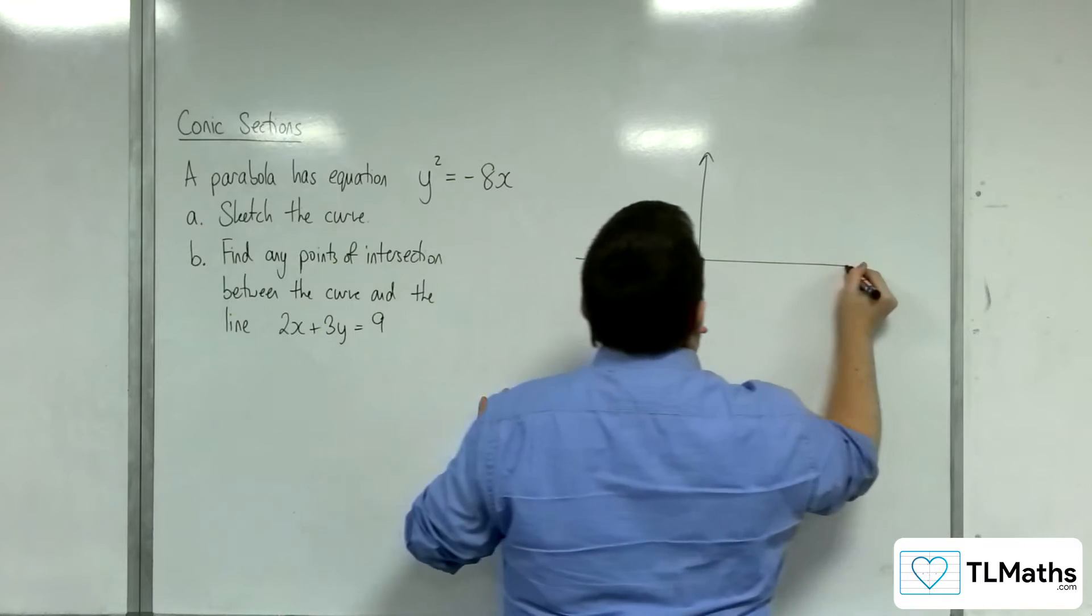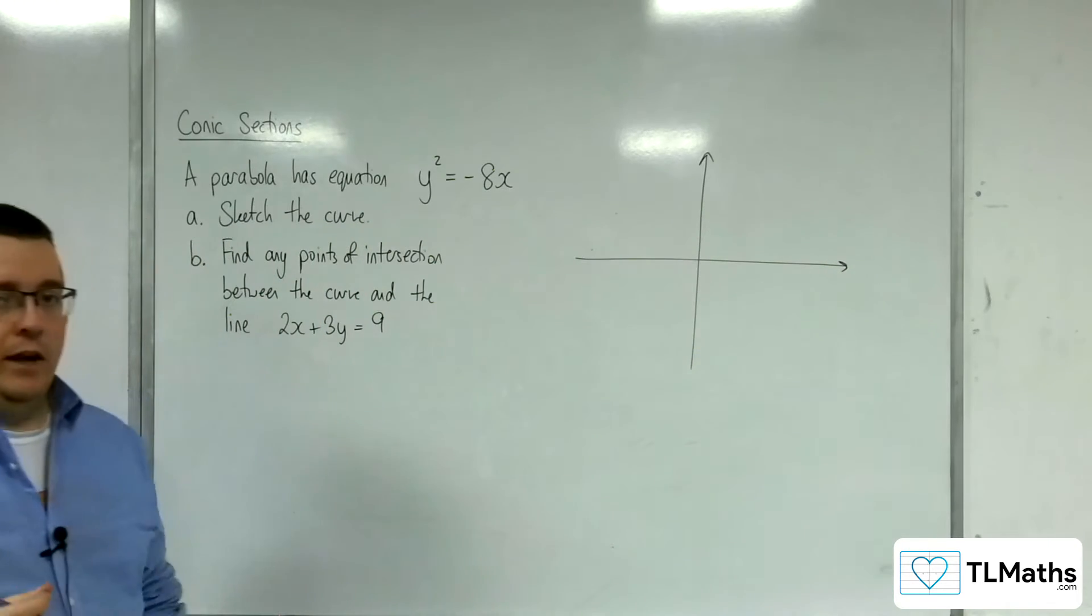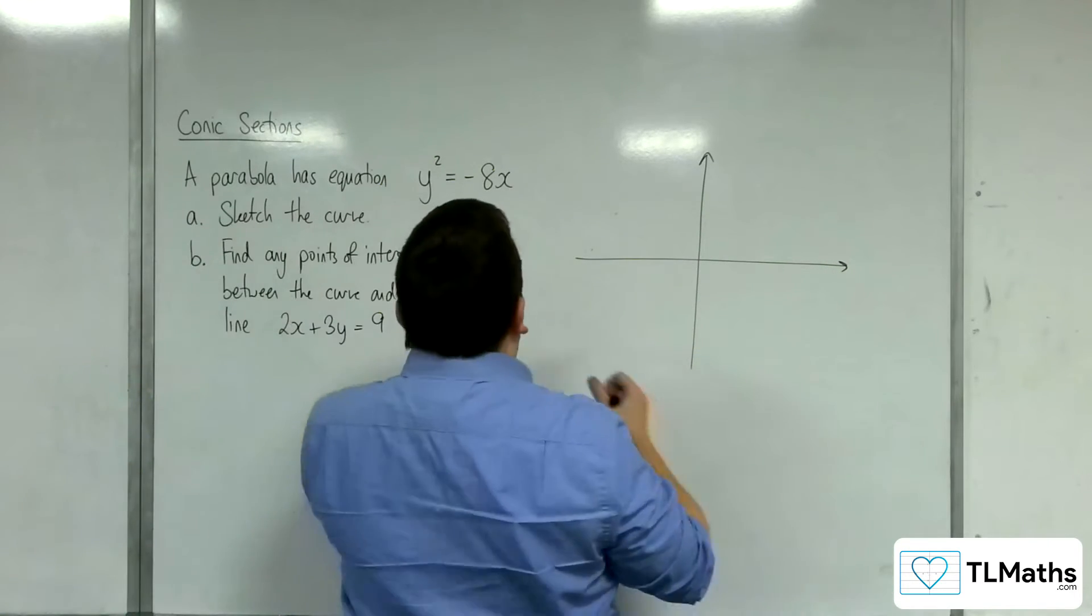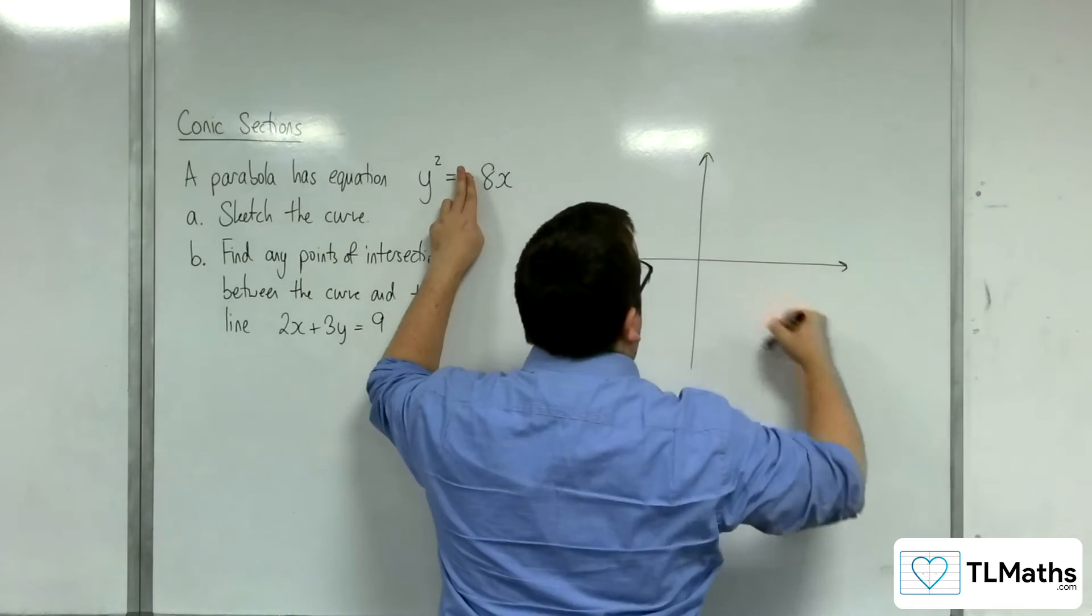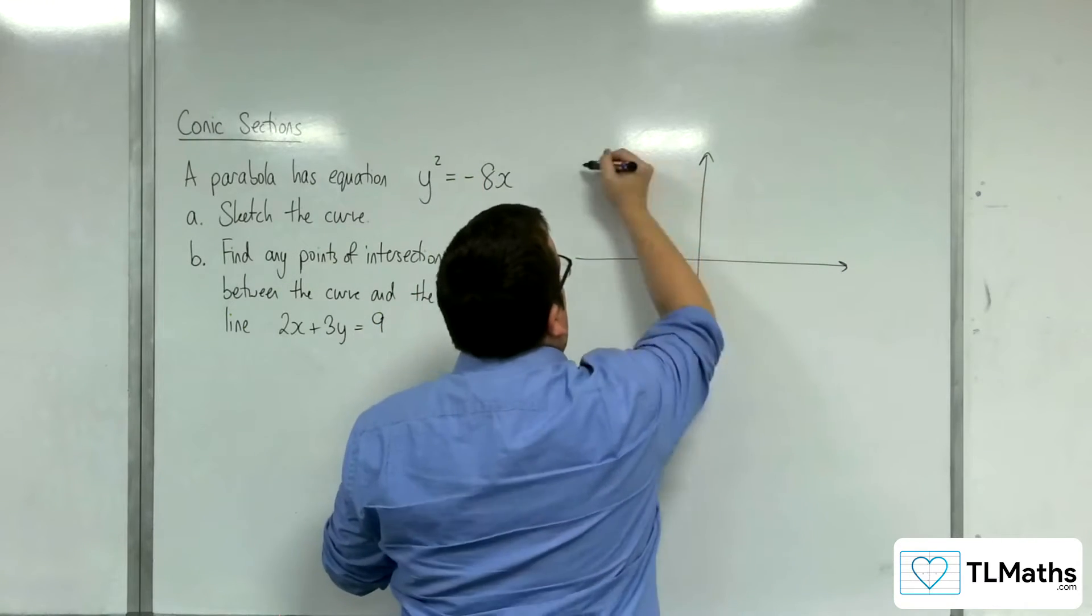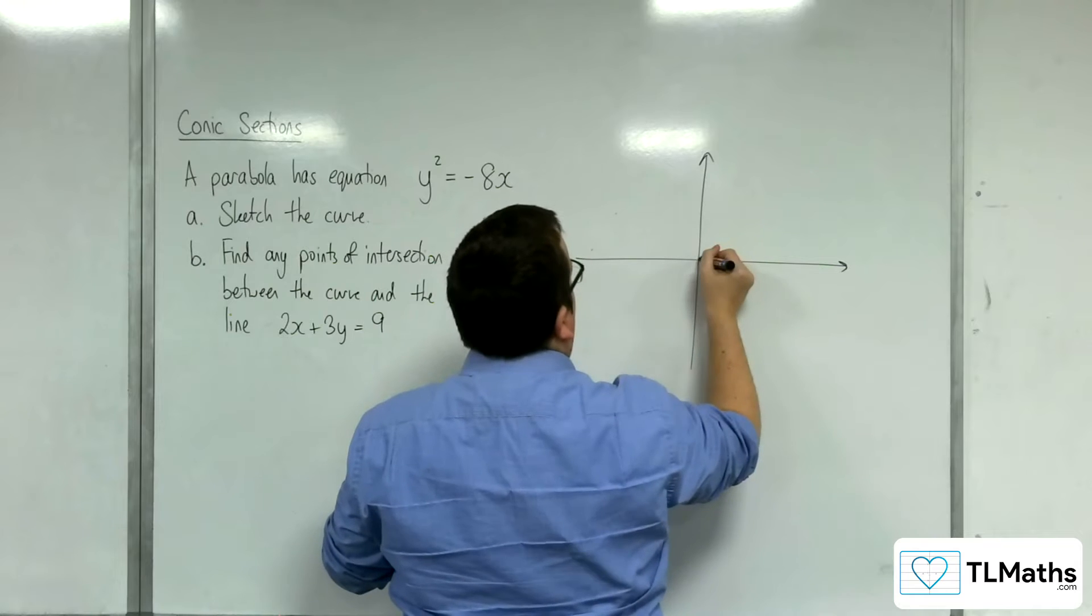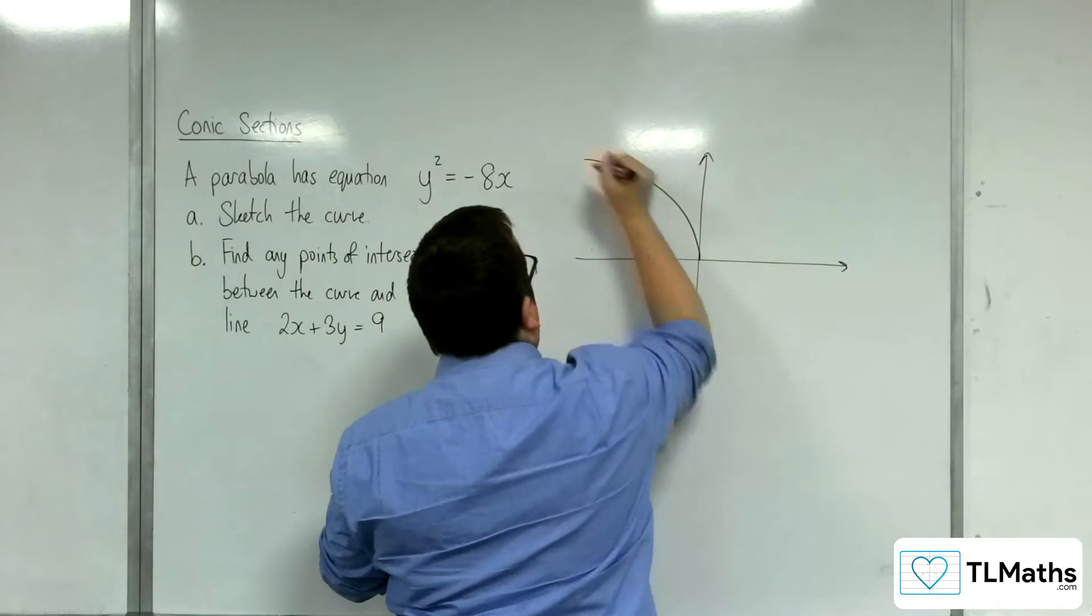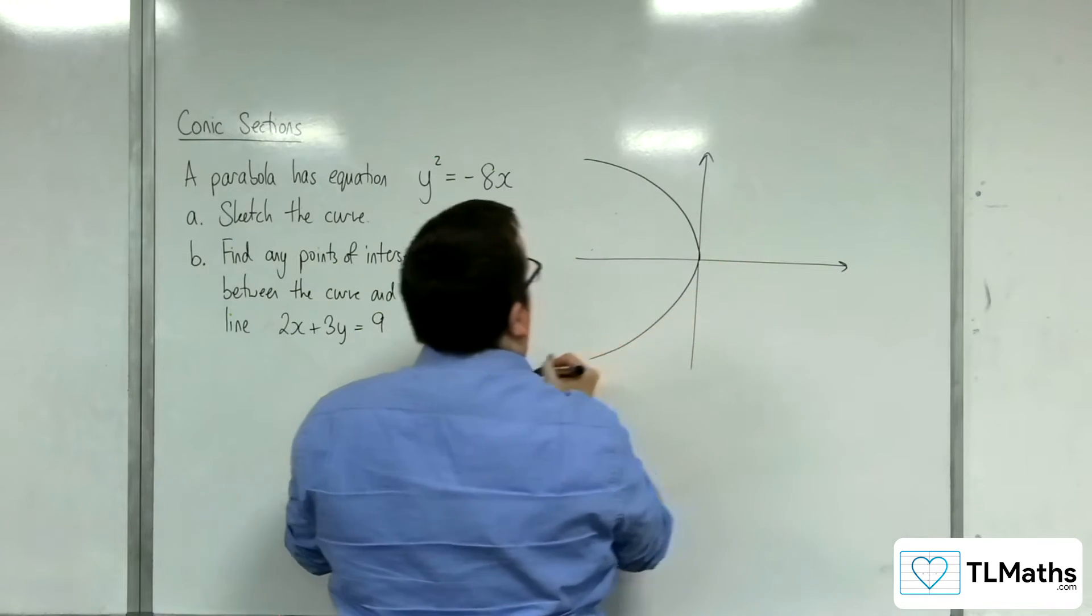So when sketching this curve, what that minus sign is going to do is, if it wasn't a minus, we'd be drawing it this way around. So with the minus, it draws this way around. Like that.